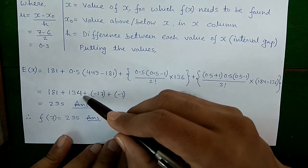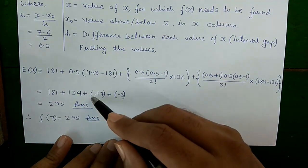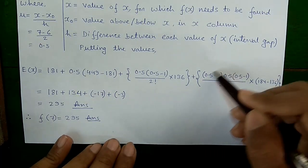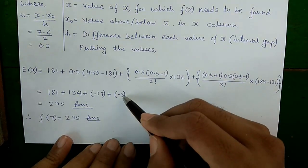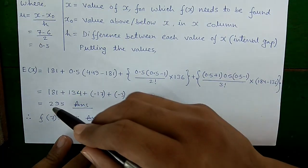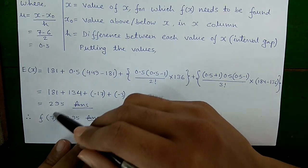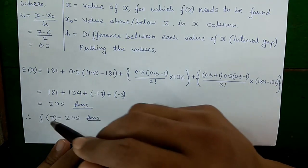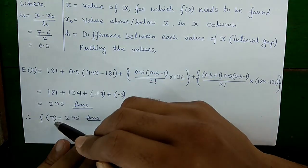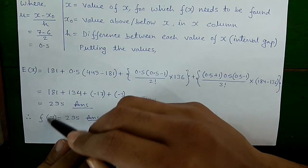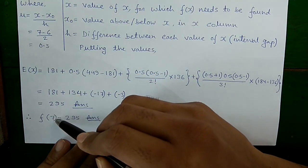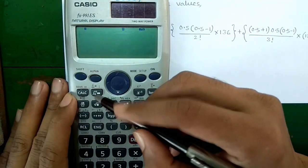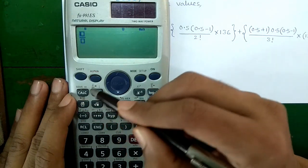By calculating: the first term gives 181, the second gives 134, the third gives −17, and the fourth gives −3. Adding them all up gives 295. So f(7) = 295, meaning the value of the function at x equal to 7 is 295.